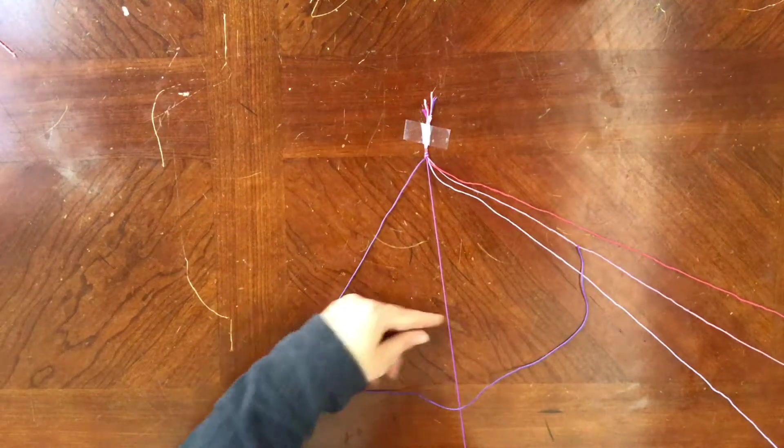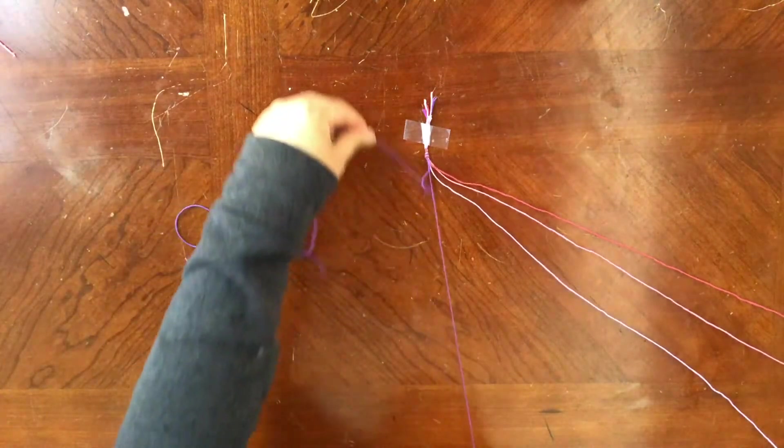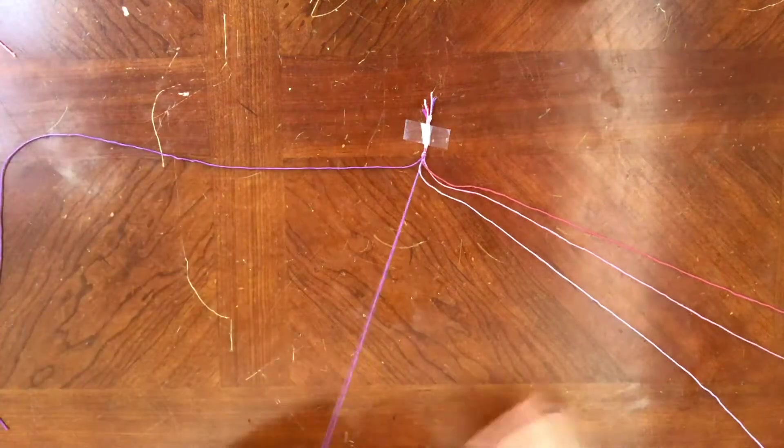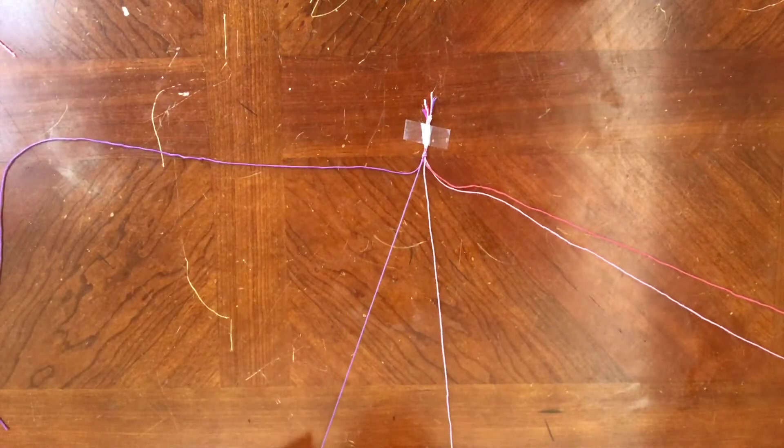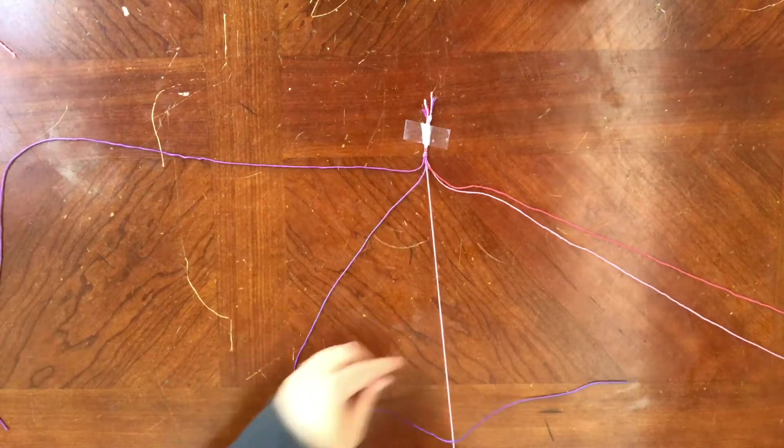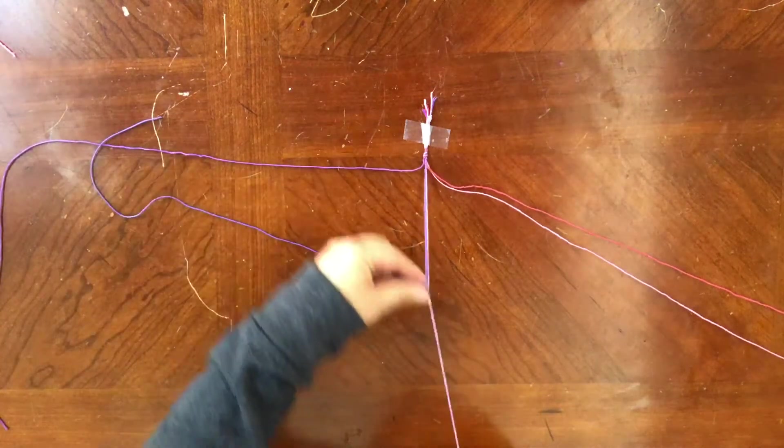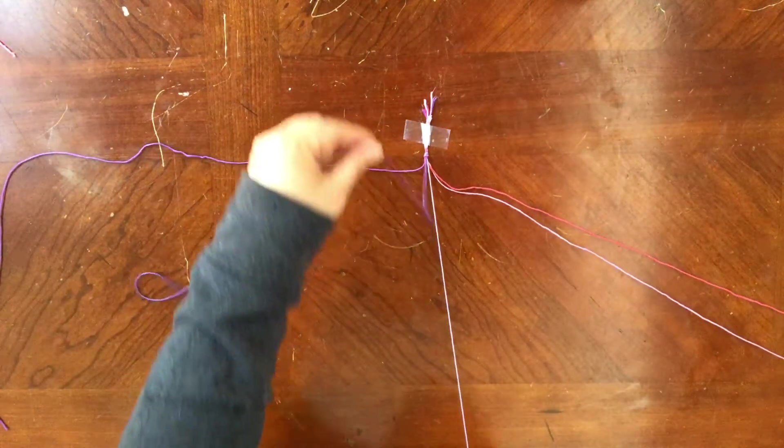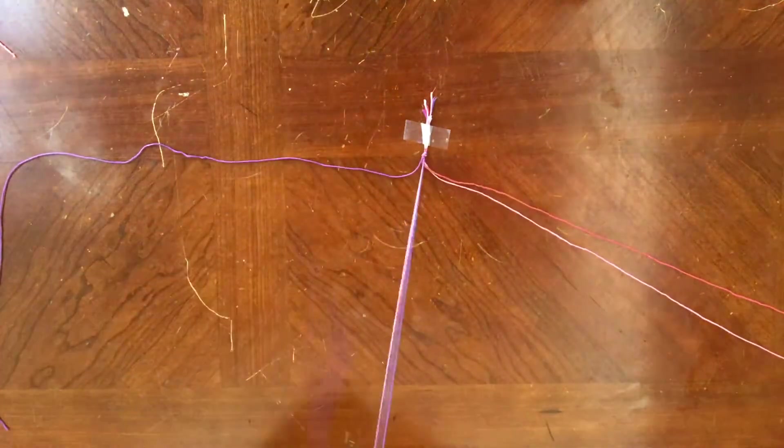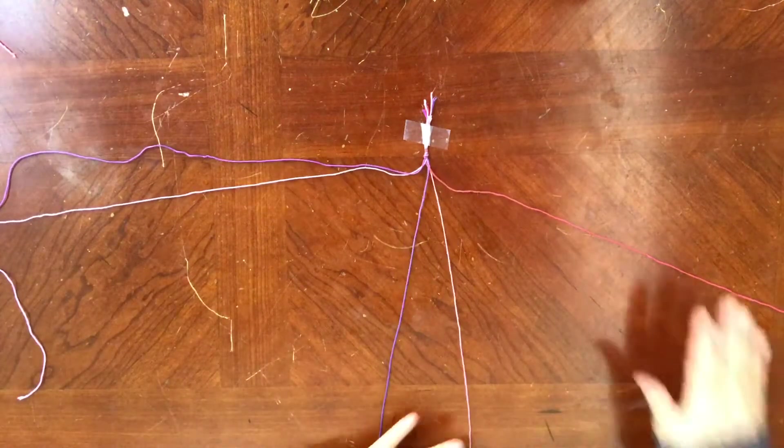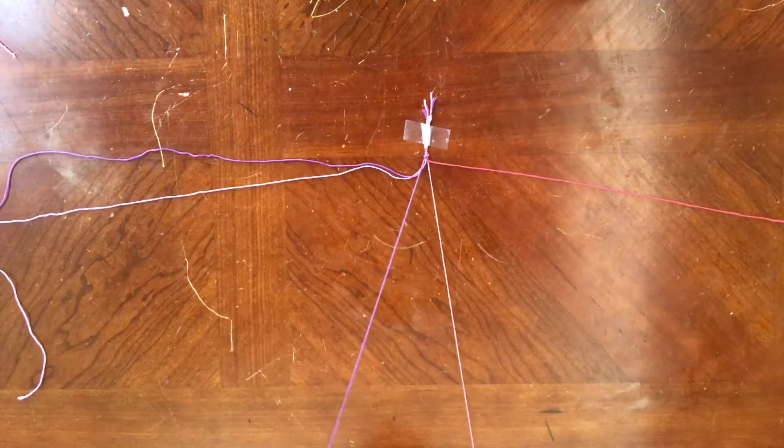The number four, pull through, and tighten the knot. Then you can get rid of the string in the middle. Take your next string and again make the number four, pull through. Second time, pull through, and you're done with that string. Move that string to the side and start with the next one. You're going to repeat this process over and over until you get to the very end.